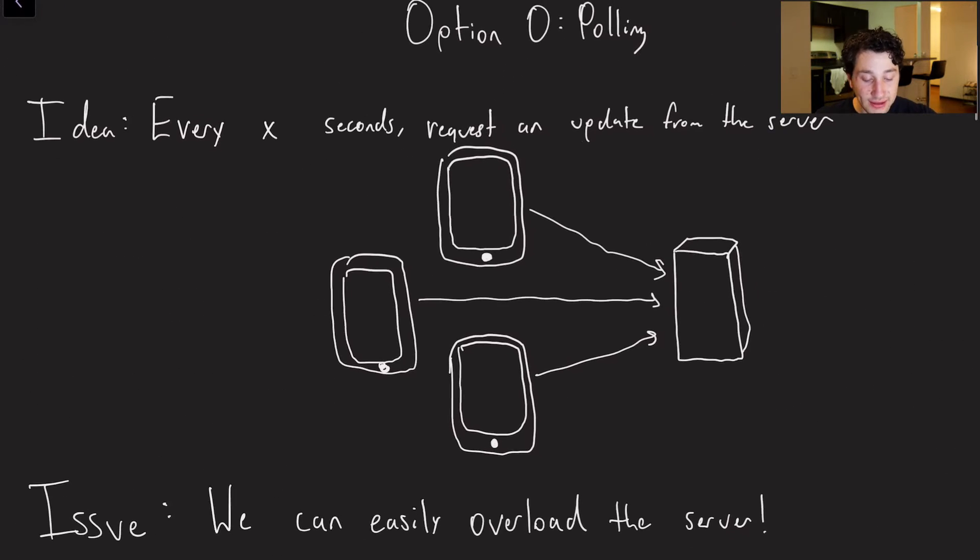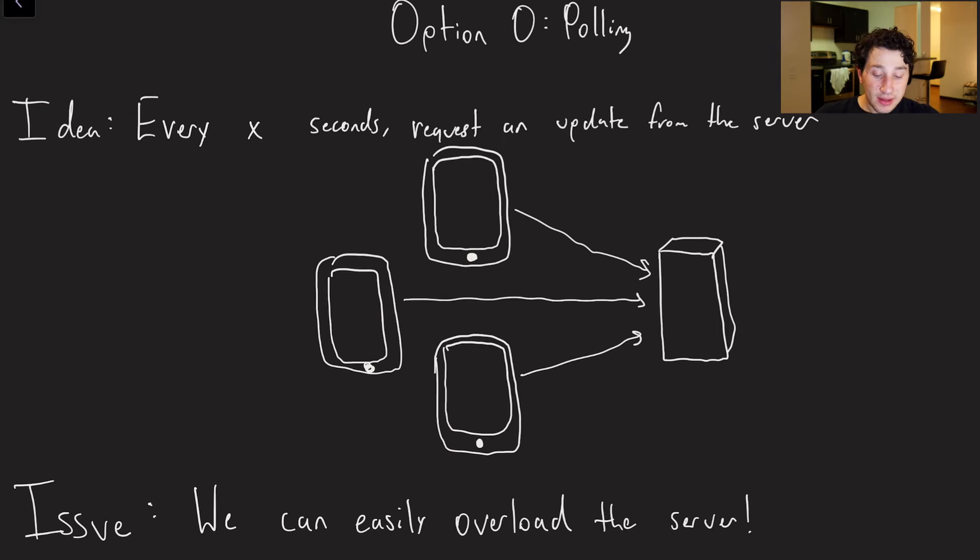Let's discuss that quickly, because the first option that we could technically do to achieve this type of thing is going to be polling, where every few seconds, basically, the client, which could be my mobile device, is going to go ahead and request an update from a server. So every four seconds, on repeat forever, we are going to request from the server. And what's going to happen is that this thing is going to get overloaded.